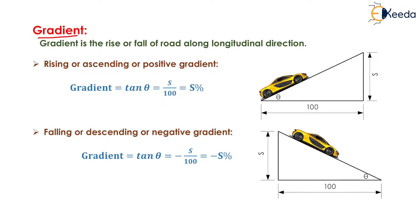What do you mean by gradient? Gradient is the rise or fall of road along the longitudinal direction. It is generally of two types: first one is rising gradient or positive gradient, and the next one is falling or negative gradient.